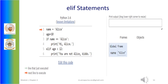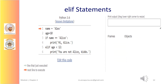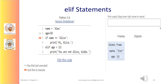Here we will see the execution of the elif statement. Observe that the name is initialized to Alice and age to 10. Therefore, the if clause is executed. In the next example, observe that name is initialized to Alex and age to 10. Therefore, the if condition is false and the elif clause gets executed, giving the output: 'you are not Alice kiddo'.